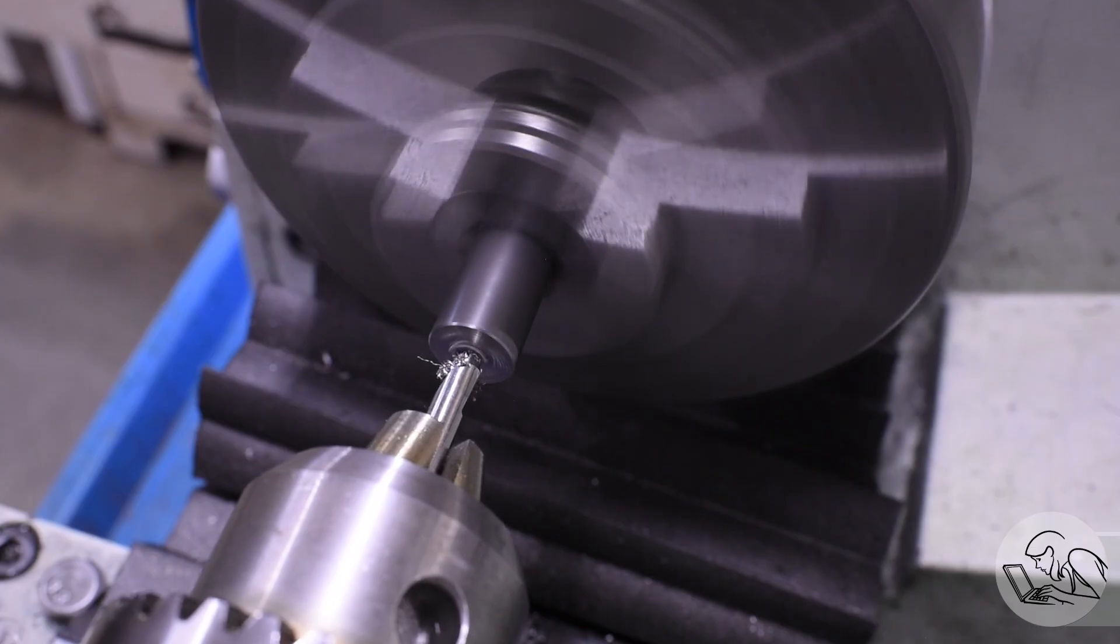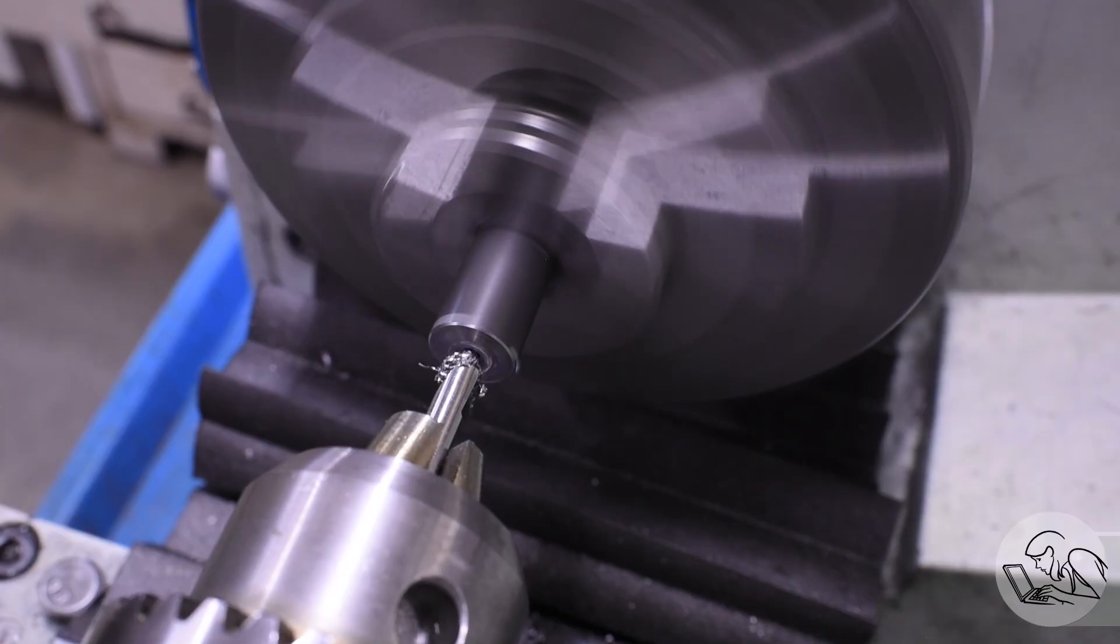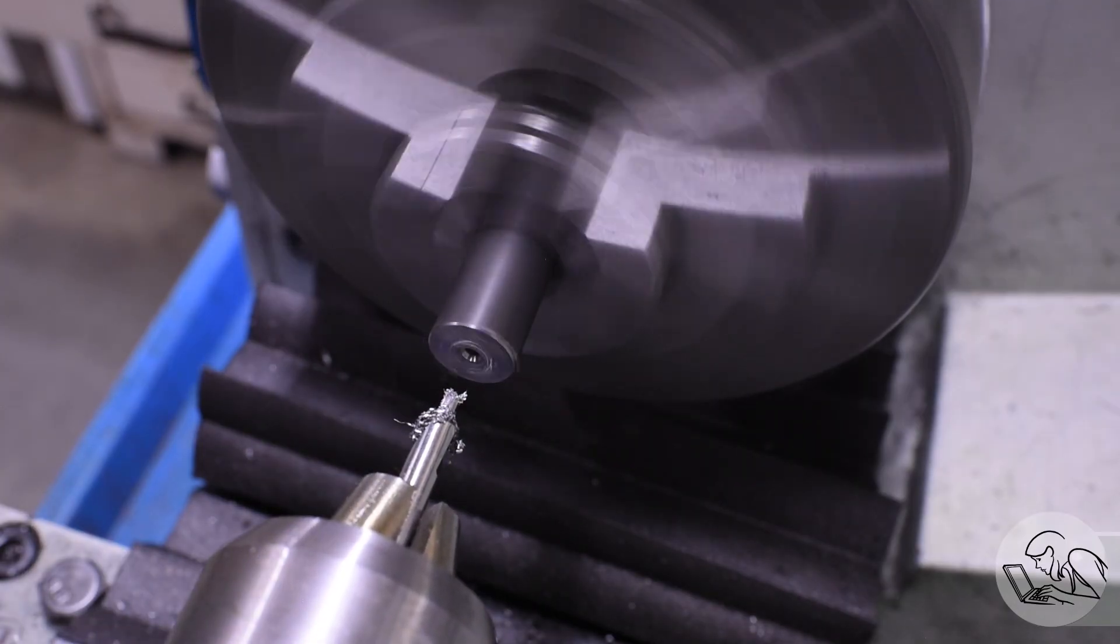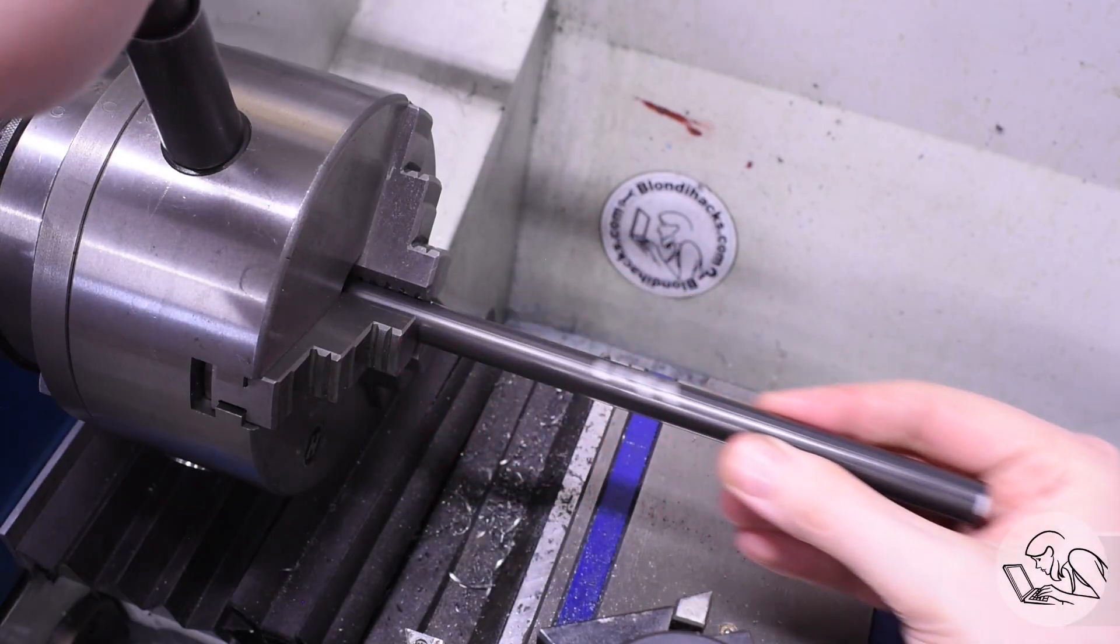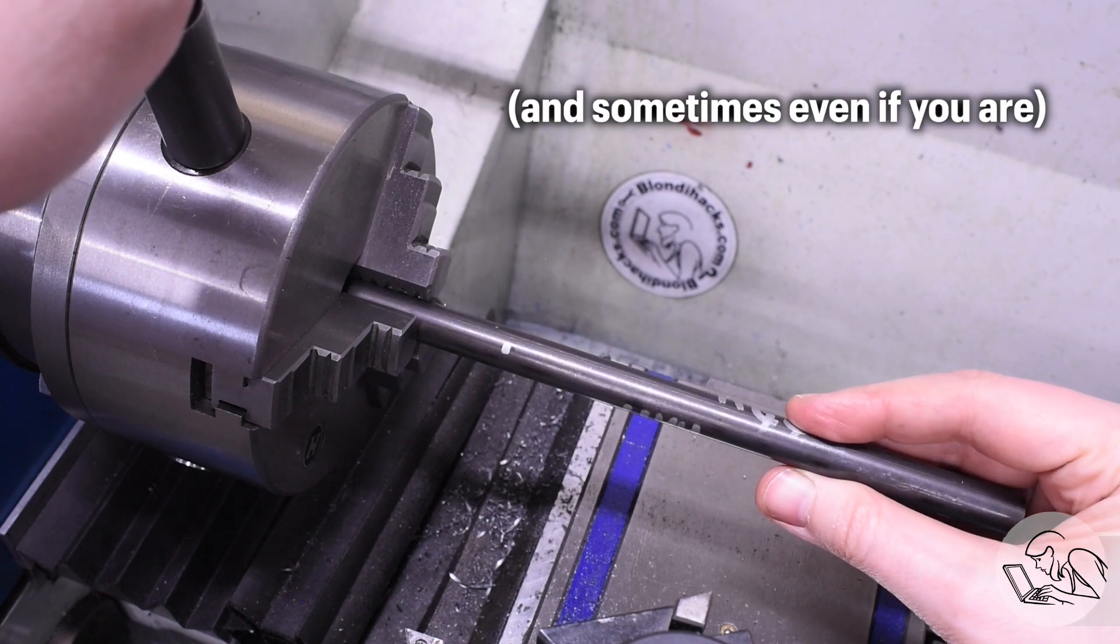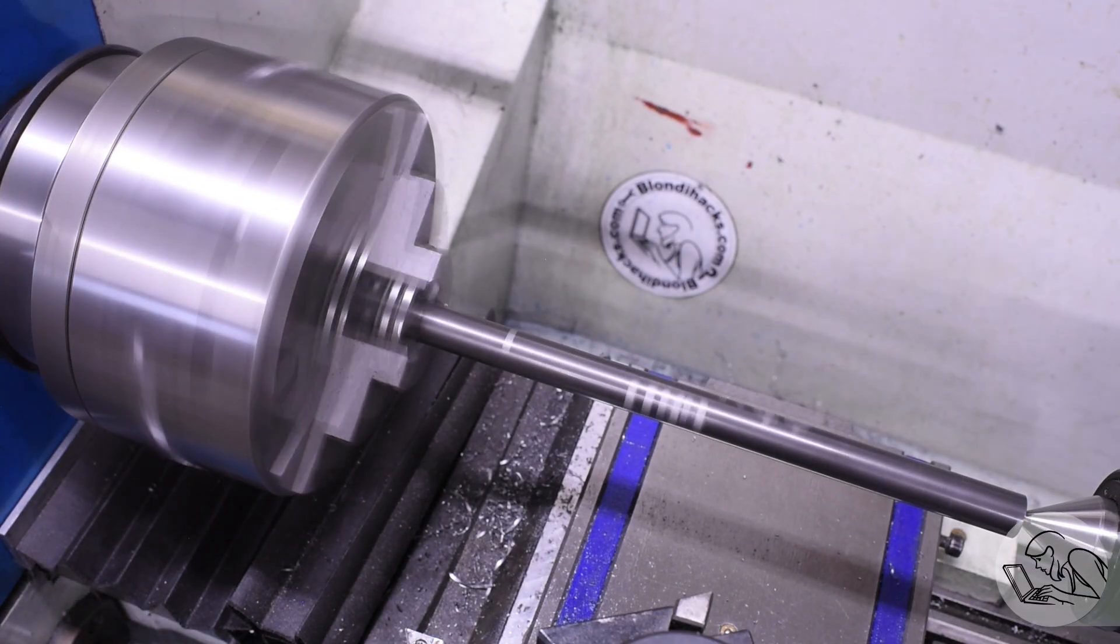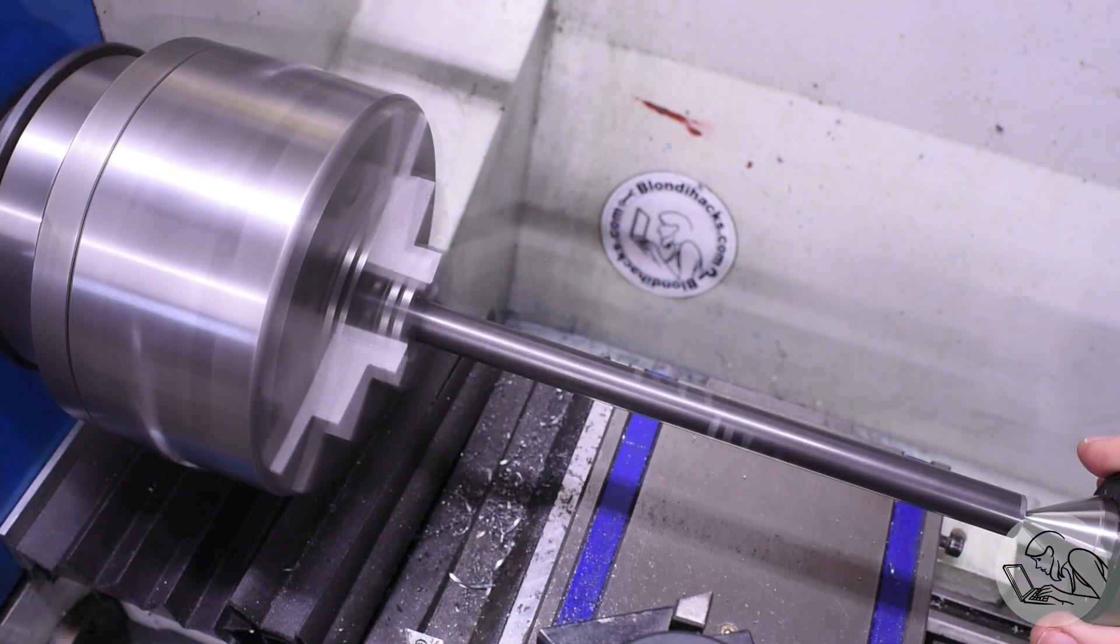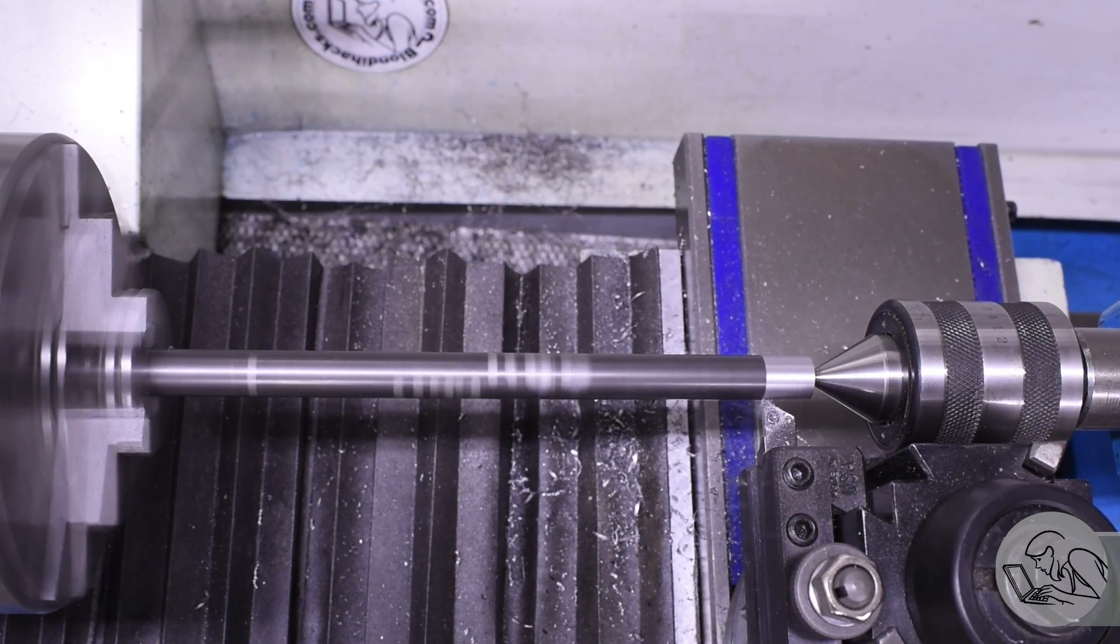Here's another interesting center drill decision. I chose to put the center in it while it was choked up in the chuck and that's because I know I'm going to be turning down the OD of this part. However, you get better centers if you do them while the part is pulled out of the chuck because that will automatically compensate for any bend or other flaws in the material. So if you're not going to be turning the OD, you want to pull the part out and drill the center while the stock is pulled out. And if the stock is going to be too flimsy to do that, then you're going to want to set up the steady rest. However, if you're turning down the OD like I am here, it doesn't matter if the center is a little bit off because you're going to be reacquiring the concentricity by the turning in any case.